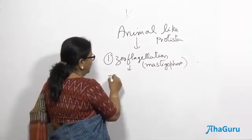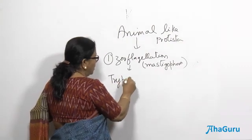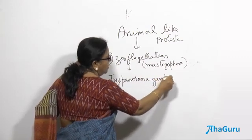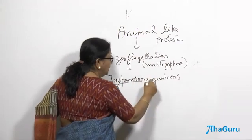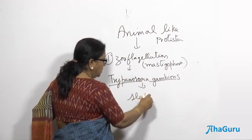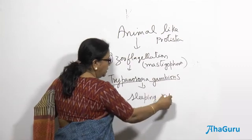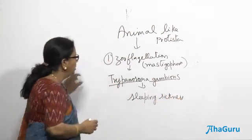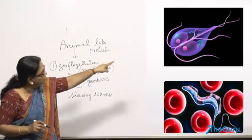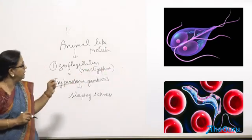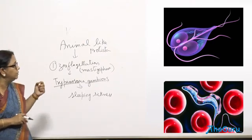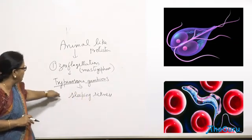Trypanosoma gambiae causes a fever which is called sleeping sickness, very commonly heard in African countries. You can see in the picture the organism having a flagellum, found in between the RBCs — that is trypanosoma. It causes a kind of coma, which is why the sickness is called sleeping sickness, sometimes called Gambian fever. This trypanosoma is transmitted via a fly known as the tsetse fly.